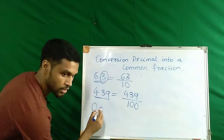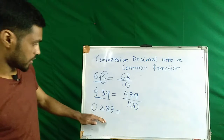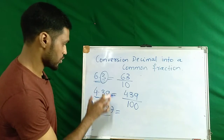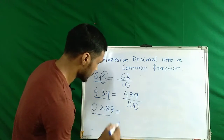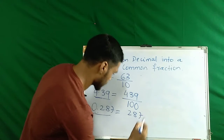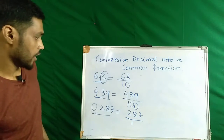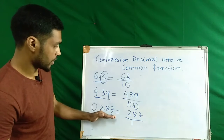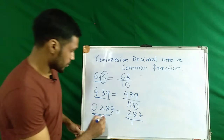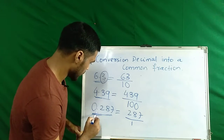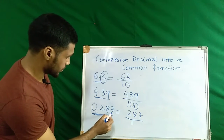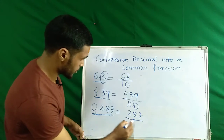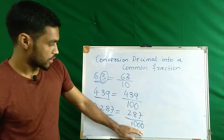Let us take another example. We are going to convert this decimal into a common fraction. To convert it, write the given decimal without the decimal point, then write 1. In this decimal we have 3 decimal places — 1, 2, 3 — all numbers coming after the decimal point. So we have to write 3 zeros on the right side of the 1.